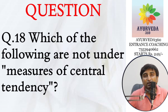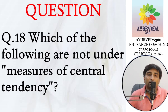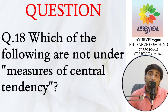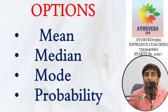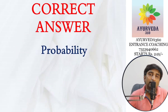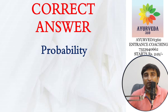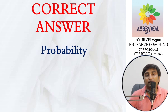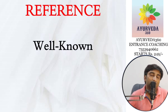The next question from biostatistics asks: which is not considered under measures of central tendency? Mean, Median, and Mode are measures of central tendency. Probability is not — that is the right answer. I think 100% of students would have got this right.